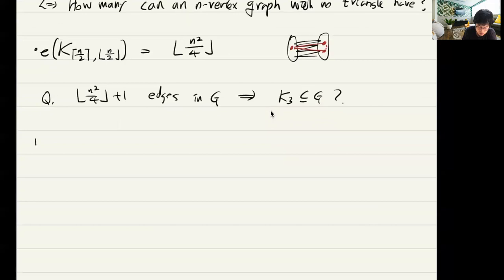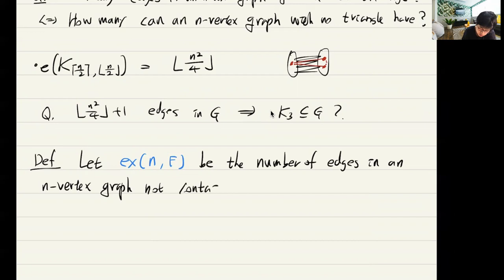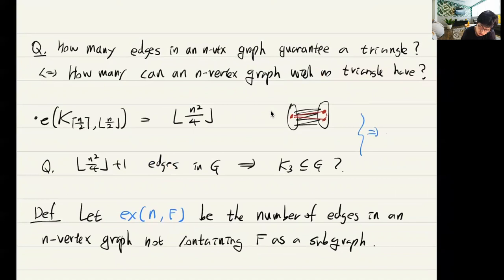To deal with this kind of natural problem, let's define some terminology. We write ex(n, F) for a given graph F as the maximum number of edges in an n-vertex graph not containing F as a subgraph. So the above question can be rephrased: what is the extremal number ex(n, K₃)?